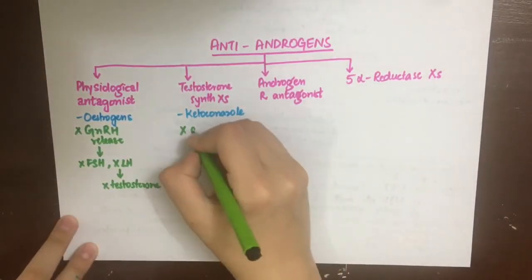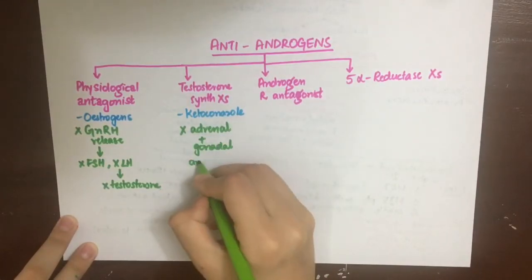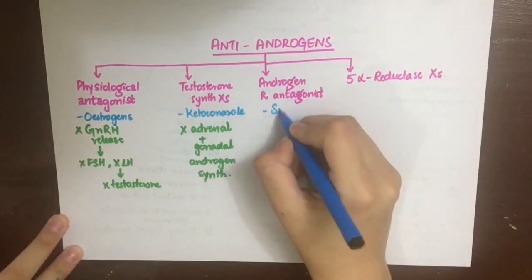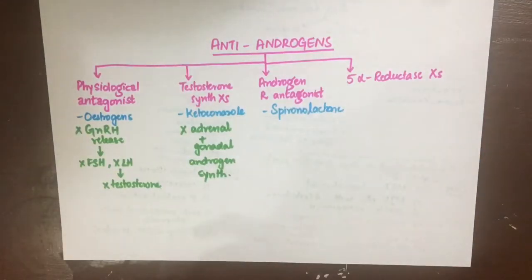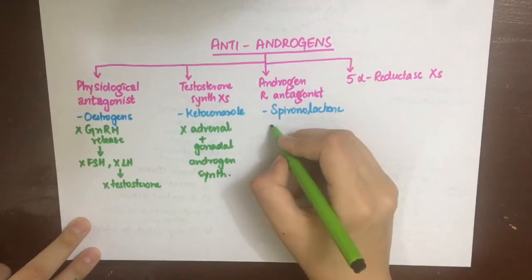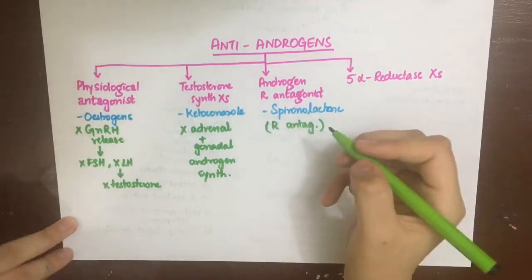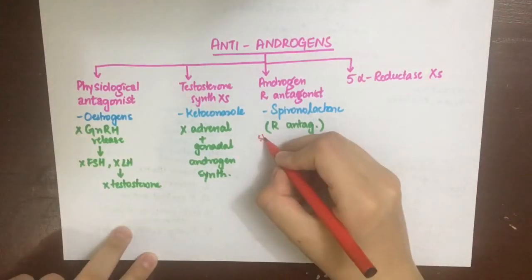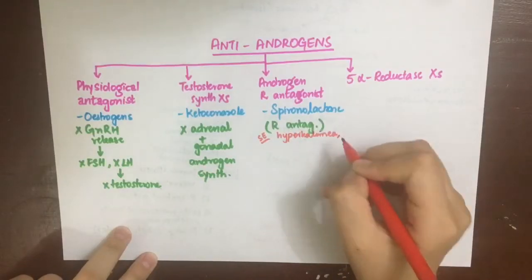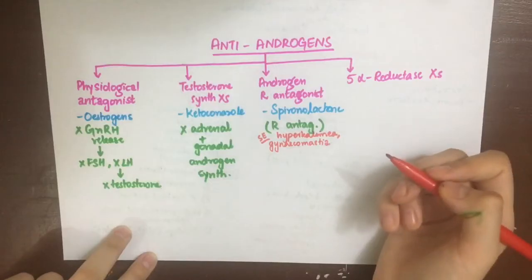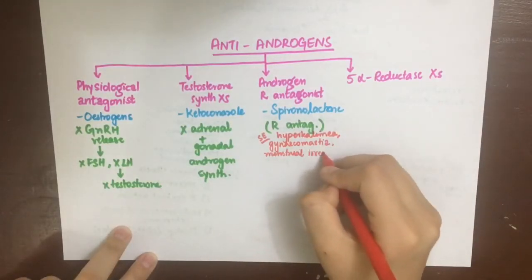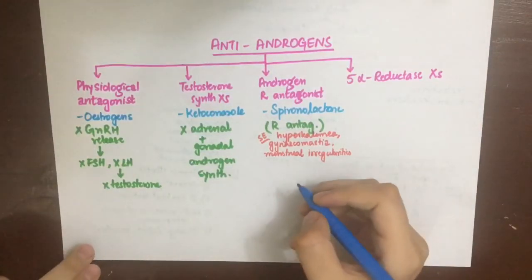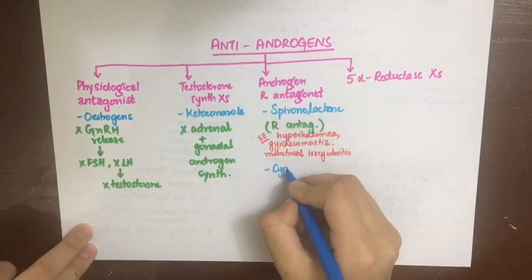Testosterone synthesis inhibitors include ketoconazole, which is primarily an antifungal drug that inhibits testosterone synthesis both in the adrenals and in the gonads. For androgen receptor antagonists, the first is spironolactone, which inhibits the androgen receptor and also inhibits synthesis. As a potassium-sparing diuretic, spironolactone causes hyperkalemia, gynecomastia due to its androgen antagonism, and menstrual abnormalities in females.